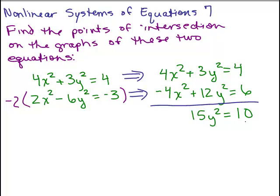Let's solve for y-squared by dividing both sides by 15. We get y-squared equals 10/15, and you just reduce that by dividing top and bottom by 5, giving y-squared equals 2/3. Now, after I do this, I could solve for y, but it's useful to remember right here that y-squared equals 2/3, because when I go back and substitute in, I already know what y-squared is.